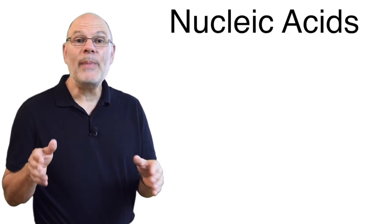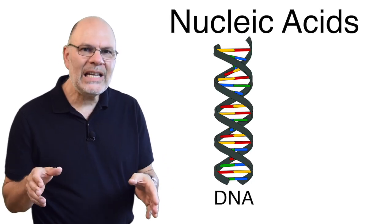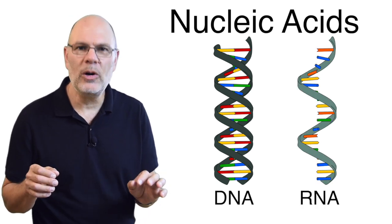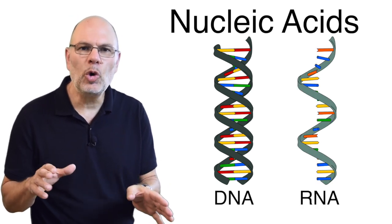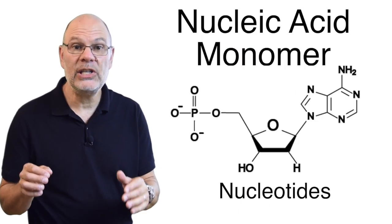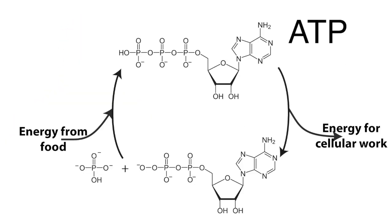The nucleic acids make up the last biomolecule family. DNA, the molecule of heredity, is a nucleic acid. So is RNA. These molecules store and transmit genetic information. The monomers of nucleic acids are nucleotides. One nucleotide, ATP, is life's key molecule for storing and releasing energy and getting work done.